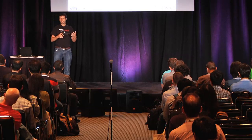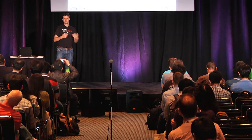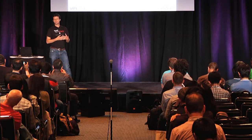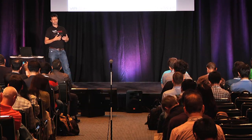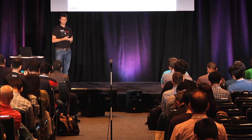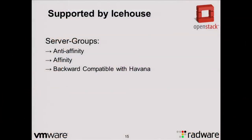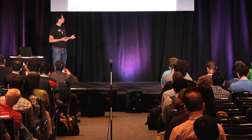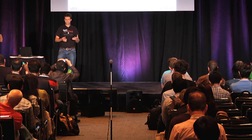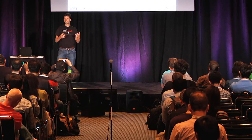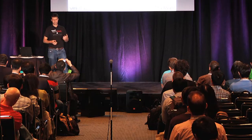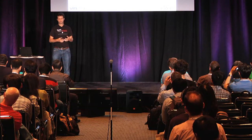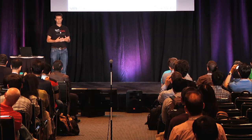To summarize what we have and where we're going: currently in Icehouse, we have the server group implementation with anti-affinity and affinity support, and backward compatibility with Havana. For the future — I'll go over a few things being discussed at the moment. Hopefully at the summit we'll be able to discuss and hash these out, and in coming versions provide this kind of support in the scheduler.